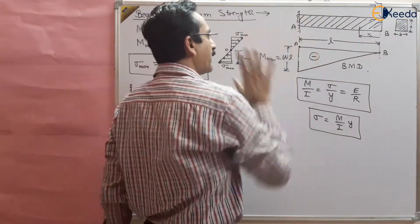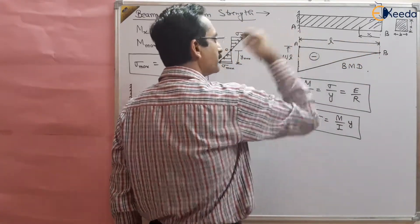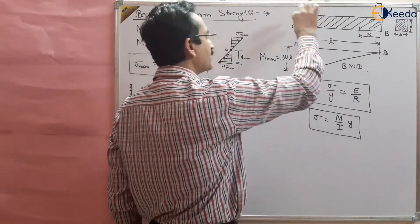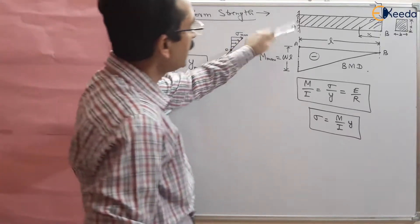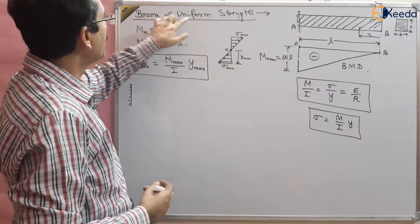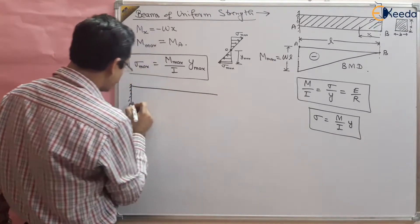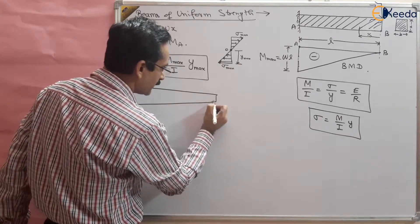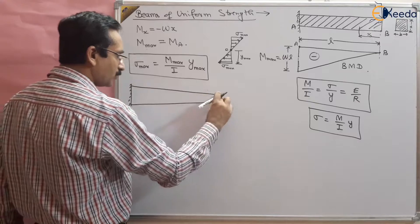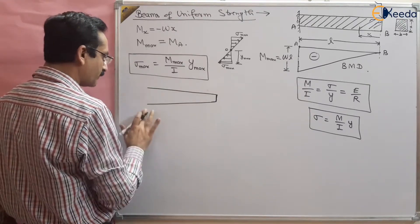The uniform beam is safe at point A but over-safe near point B, since we designed it for maximum bending moment at A. Why not change the dimensions of the beam so that it has uniform strength throughout? We can make a beam with varying dimensions — for example, with width lower near B and higher near A, as the width is varying along the length.